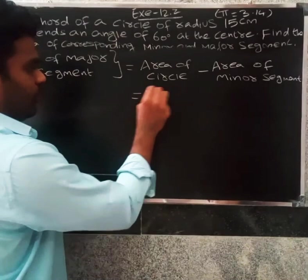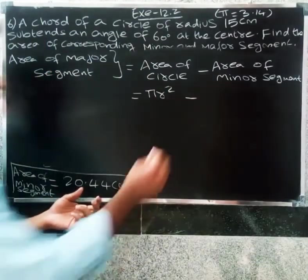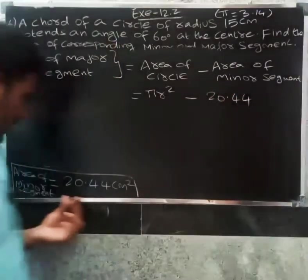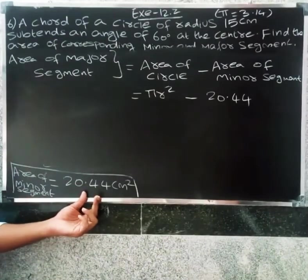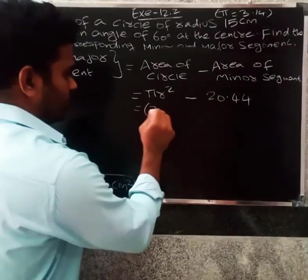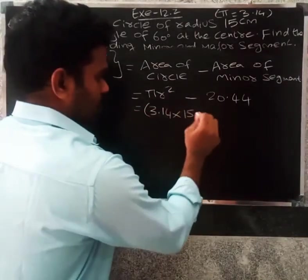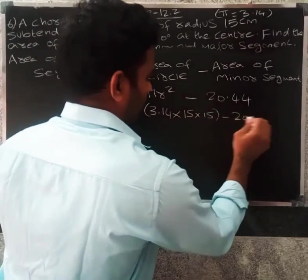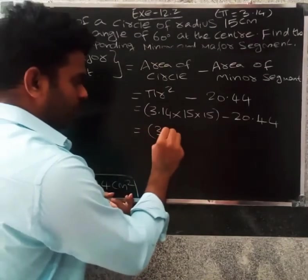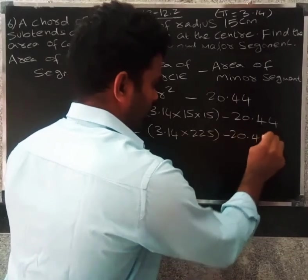Area of circle formula is pi r squared minus area of minor segment. The answer for minor segment is 20.44. Area of circle: pi value 3.14 into r value 15 into 15 minus 20.44.